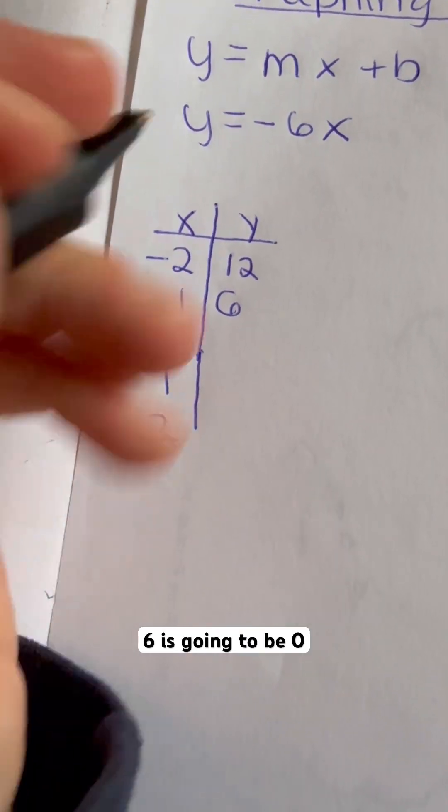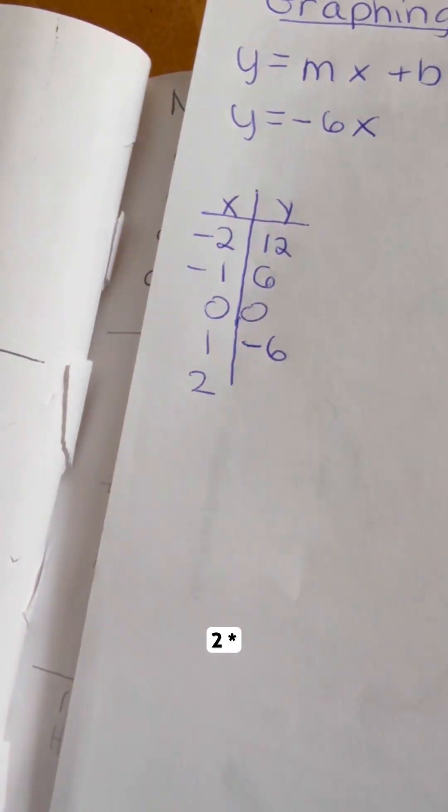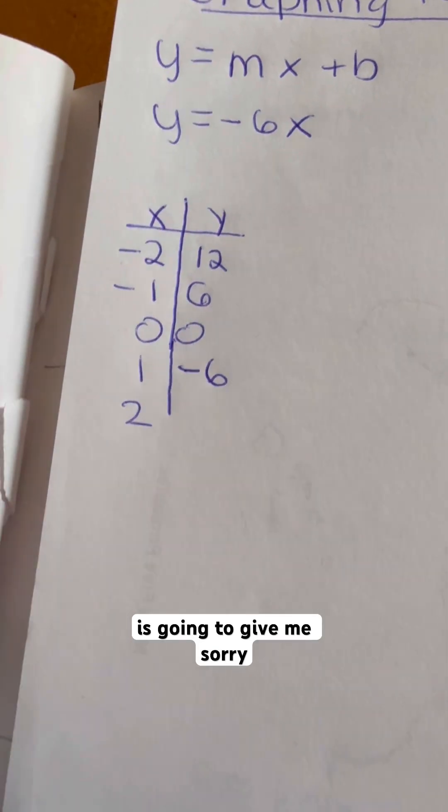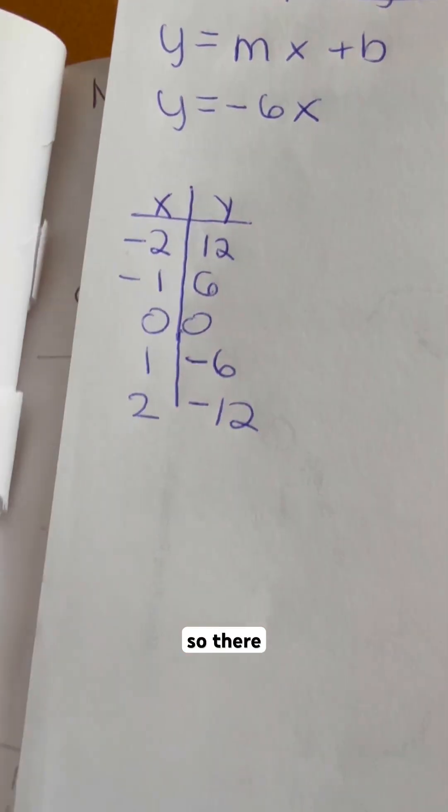0 times negative 6 is going to be 0. And then 1 times negative 6 would give me negative 6. And 2 times negative 6 is going to give me negative 12. So there we go.